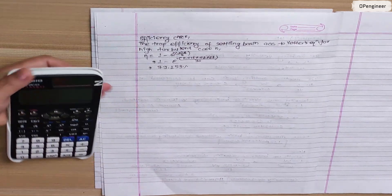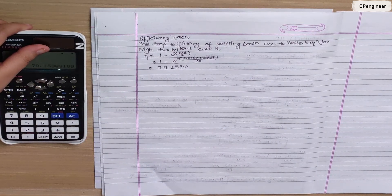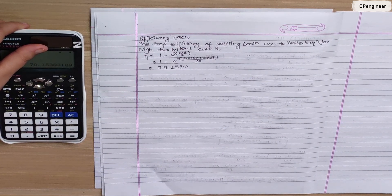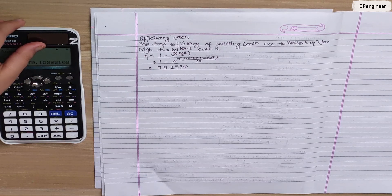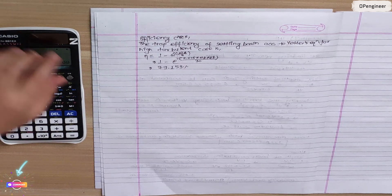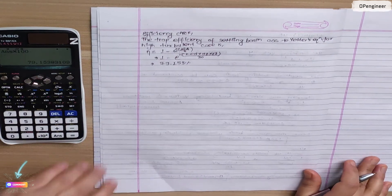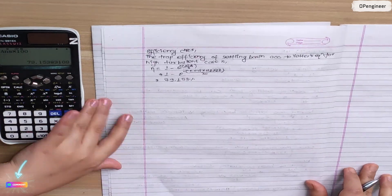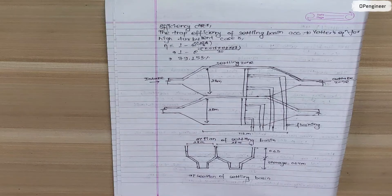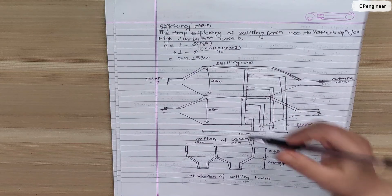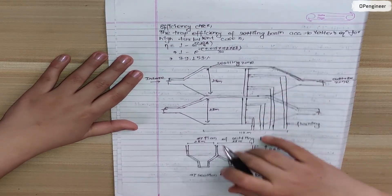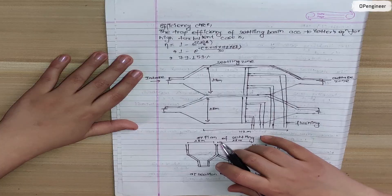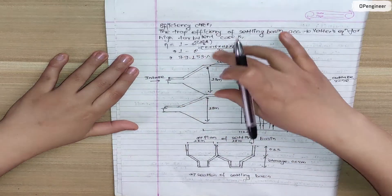Now we draw the plan and section of the settling basin, showing the major components including the settling zone, flushing zone, and intake and outtake zones.